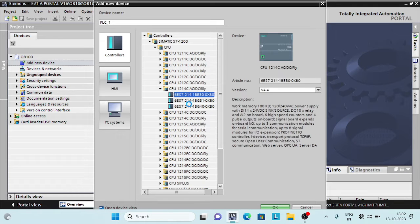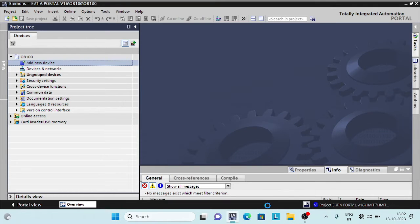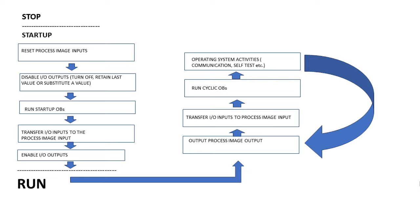After turning on the CPU, it executes a startup program before starting to execute the cyclic user program. During startup mode, the output modules are disabled. The process image is initialized and process image is not updated. The non-retentive bit memories, timers and counters are initialized. And then startup OBs are executed.